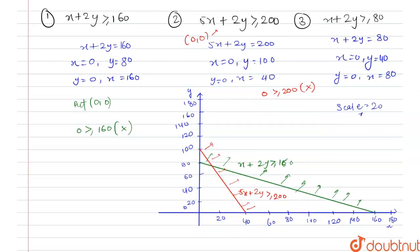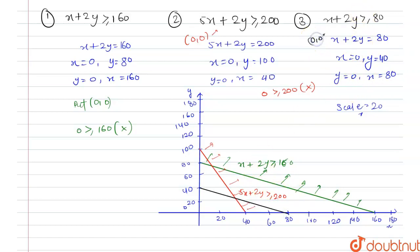For the third equation, when x equals 0, y equals 40 and when y equals 0, x equals 80. Putting the origin (0,0) gives 0 ≥ 80, which is not possible. So the origin does not satisfy this curve either, and the region for x plus 2y ≥ 80 is the one in which the origin does not lie.